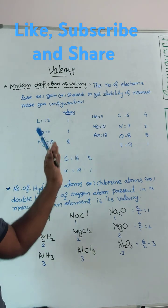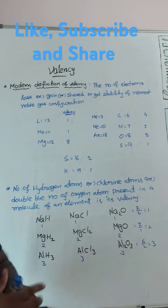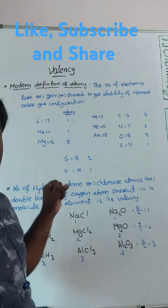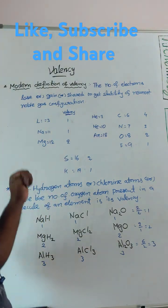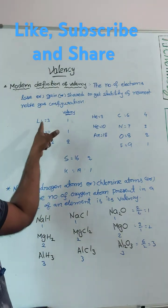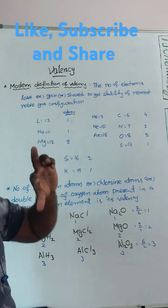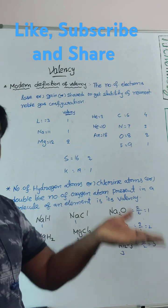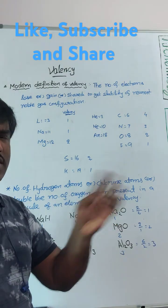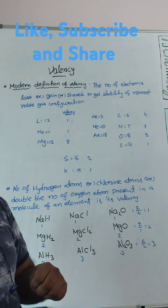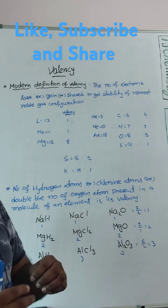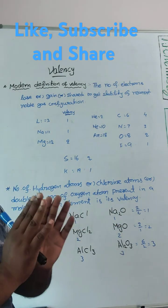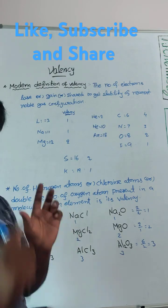Lithium wants to get stability of the nearest noble gas element. How do we select which is nearest among these three? Think both ways — how many electrons to lose versus how many to gain. Whichever number is less, that is the nearest.